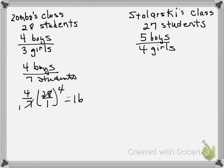That gives me 16 boys in Zombo's class. There were 28 students, so 28 minus 16 gives me 12 girls in Zombo's class.